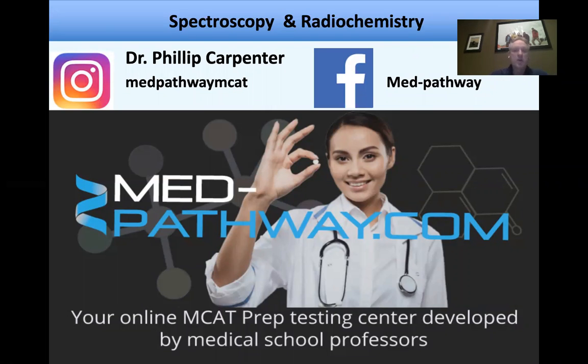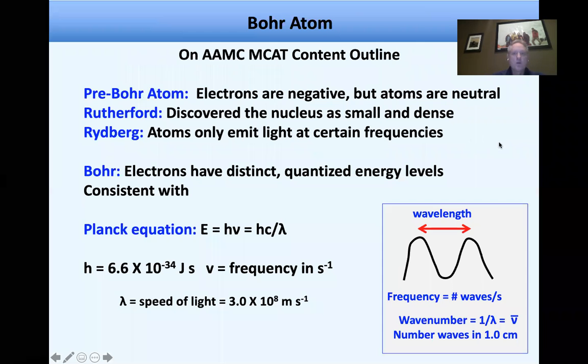So today we're going to look at spectroscopy and radiochemistry. This is the physical sciences material that's always on the MCAT. So we start with the Bohr atom, and it's on the AAMC MCAT content outline. They specifically say Bohr atom.